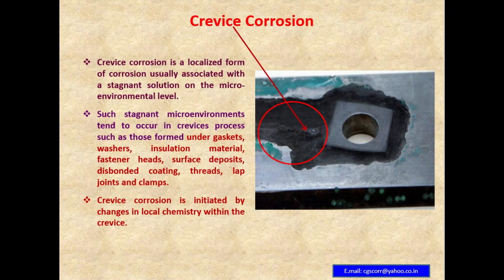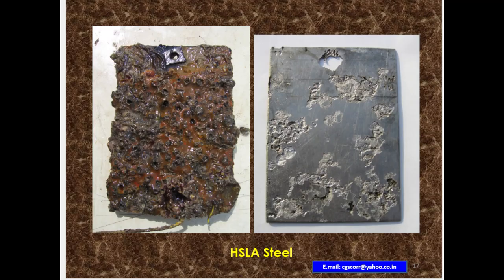Crevice corrosion is initiated by changes in local chemistry within the crevice. You can see the pictorial depiction where the crevice is noticeable. This is a typical example of high-strength low-alloy steel exposed in seawater for one year.